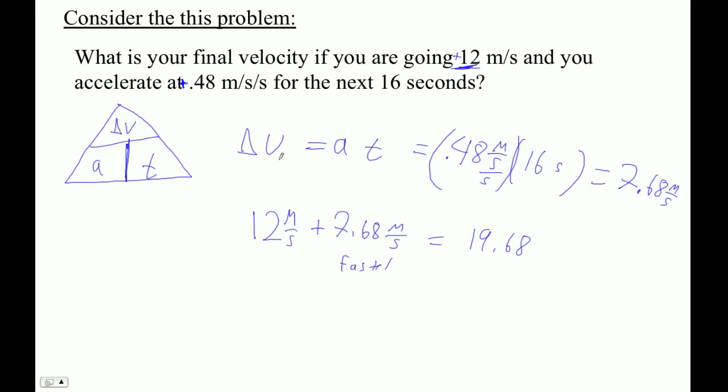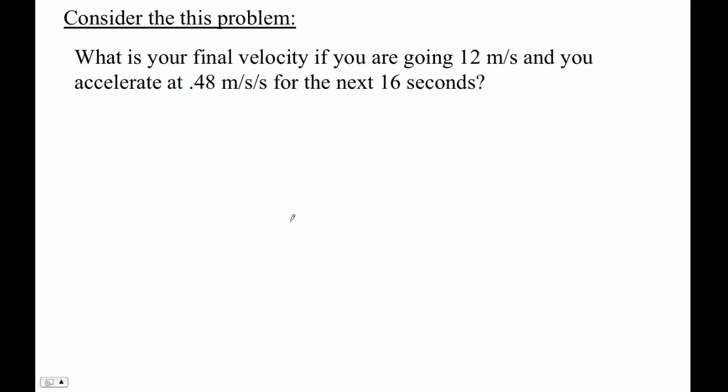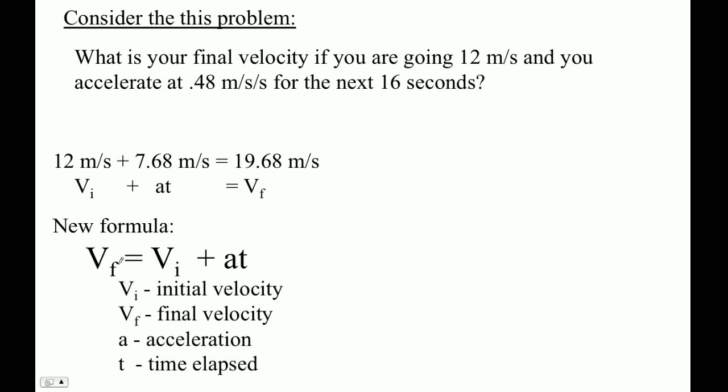This is pretty complicated, so we actually have a formula for this. What we actually did here was: we were going this fast, this was our change in velocity, and that's how fast we end up going. Our formula is that final velocity is initial velocity plus the rate at which you change velocity times time.